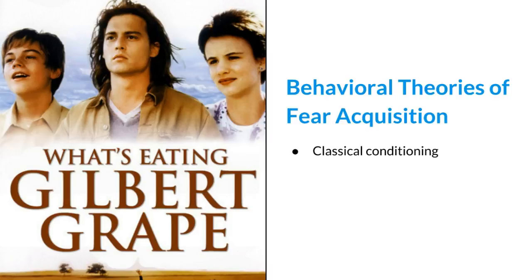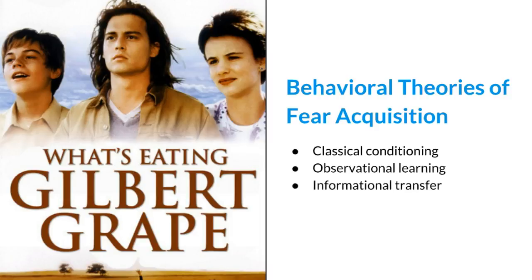Classical conditioning may lead to a conditioned fear or avoidance response, similar to the case of Little Albert. Observational learning, or vicarious conditioning, may lead to a conditioned fear or response upon witnessing or observing a traumatic event. Informational transfer may occur when a person instructs someone that a certain object or situation should be feared — parents do this all the time in simple scenarios to protect their children. The film What's Eating Gilbert Grape is an example of a mentally disabled young boy who develops a conditioned fear response.